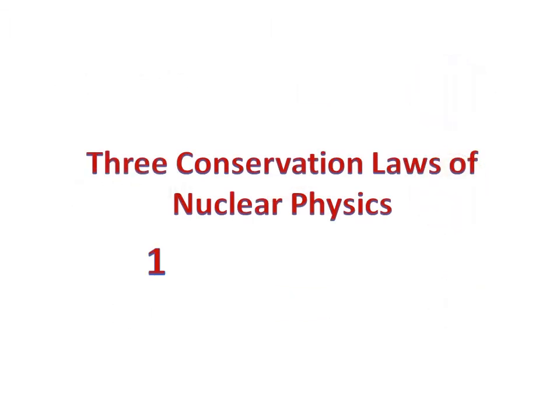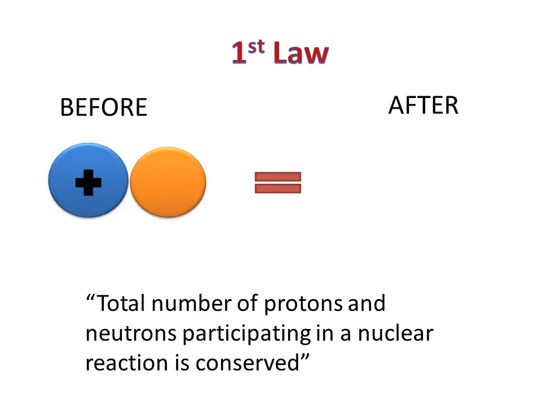Nuclear physics is based off of three conservation laws. The first conservation law states that the total number of protons and neutrons participating in a nuclear reaction is conserved. This means that the sum of all the nucleons will be the same before, during, and after the reaction.